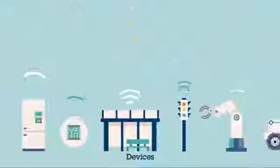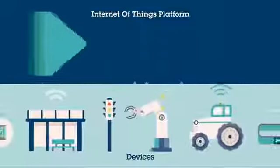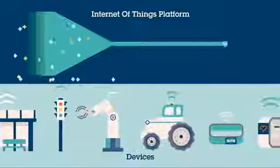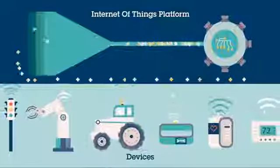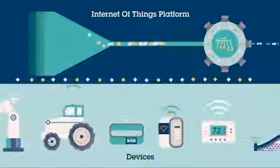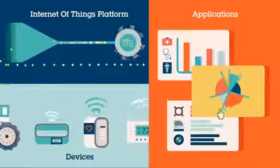The process starts with the devices themselves, which securely communicate with an Internet of Things platform. This platform integrates the data from many devices and applies analytics to share the most valuable data with applications that address industry-specific needs.